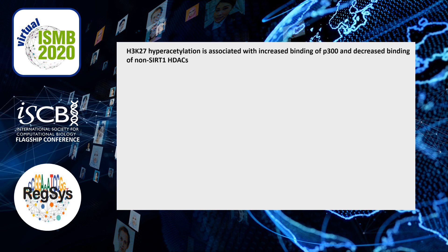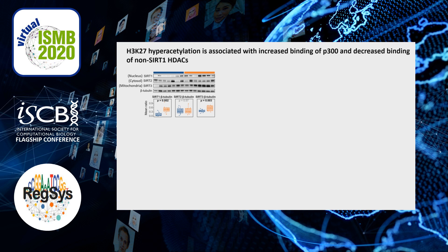Our next question was whether H3K27ac hyperacetylation is indeed induced by altered sirtuin activity. For technical reasons, direct activity cannot be measured in the post-mortem brain. However, immunoblot analysis did indicate altered protein levels of the sirtuins, consistent with their decreased activity. We next looked at the ENCODE ChIP-seq data available for p300 and several non-sirtuin HDACs. If sirtuin activity is decreased, p300 activity should be increased, leading to increased histone acetylation. If our hypothesis is correct, H3K27ac hyperacetylation should be more pronounced in genomic regions with multiple p300 binding sites and fewer non-sirtuin HDAC binding sites, since these can compensate for decreased sirtuin activity. And as I will explain, this is exactly what we observed.